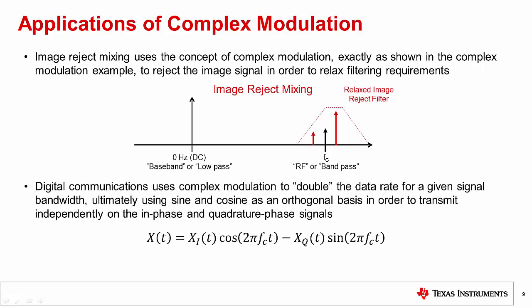Secondly, complex modulation is widely used in digital communications in order to double the data rate for a given signal bandwidth. This improves spectral efficiency, which is important when bandwidth is limited, such as in wireless communications. Doubling of the data rate is possible because sine and cosine are orthogonal functions, allowing separation of the I and Q components. Since I and Q can be separated, they can contain independent information.